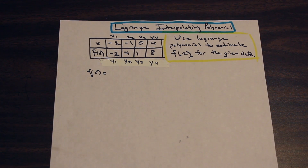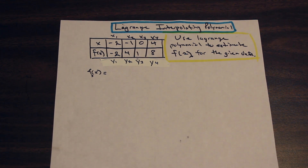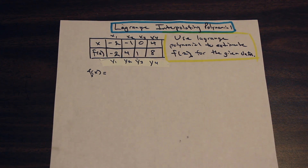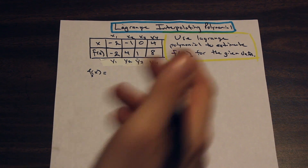Hey guys, welcome back. Fred here at AF Math and Engineering. We're going to do a quick example on how to use the Lagrange interpolating polynomial to estimate or fit a polynomial to a set of data. There are these really confusing long formulas that a lot of people get thrown off by, so I'm not going to show you the formula. I'll just show you how I do it, and hopefully that helps you understand it — or you can just remember the process and not even worry about the formula.